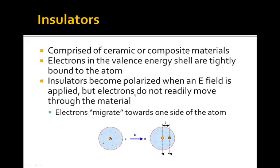The only thing that can happen to an insulator is that it can become polarized when an electric field is applied. Electrons don't readily move through the material, but when we apply an electric field, the electrons tend to migrate to one side of the atom. All the electrons will move to one side while the positive charges move toward the other side of the atom, creating what's called a dipole — a more negatively charged region where the electrons concentrate, and a more positively charged region where the nucleus sits. Electrons cannot migrate throughout the material; they can only become polarized.